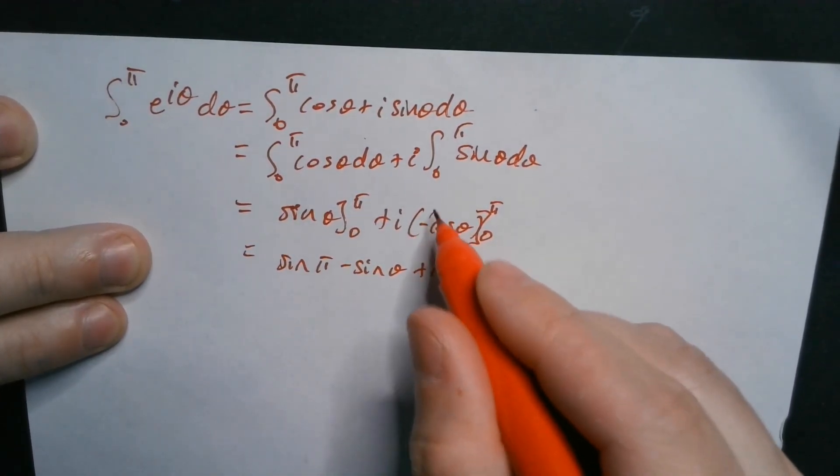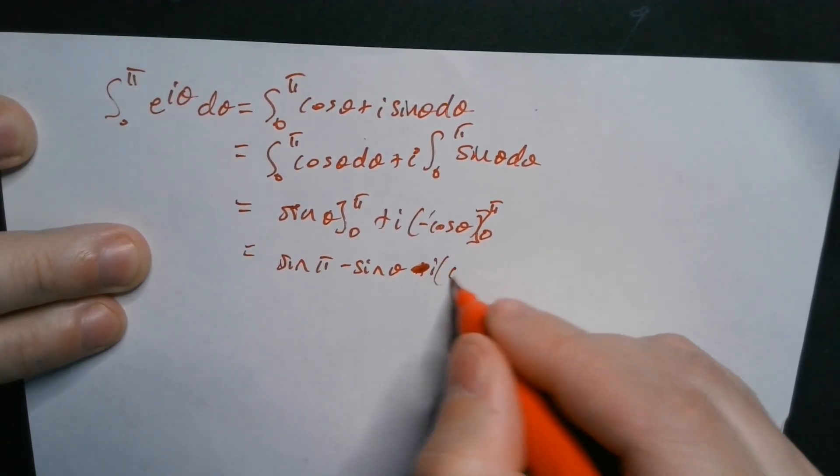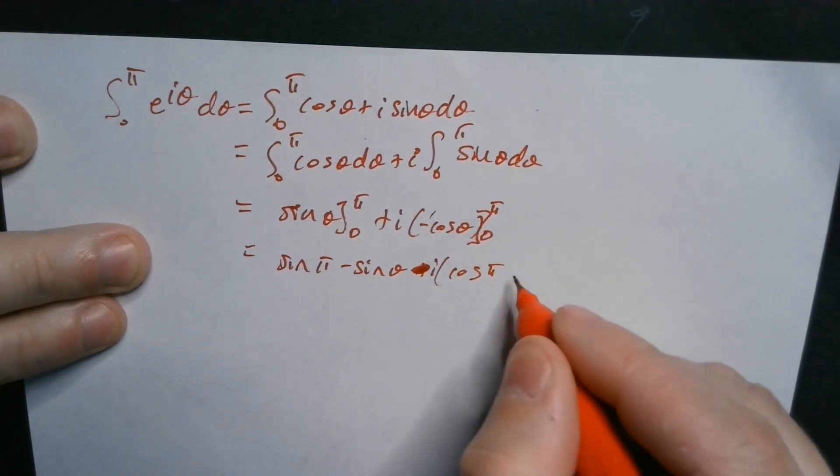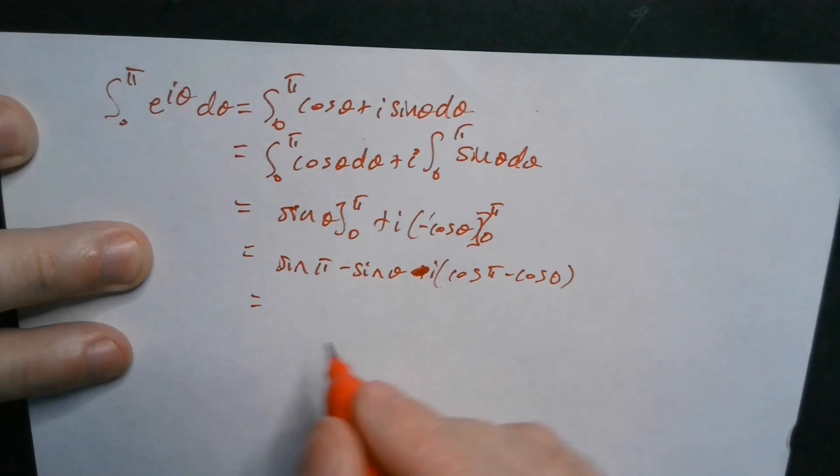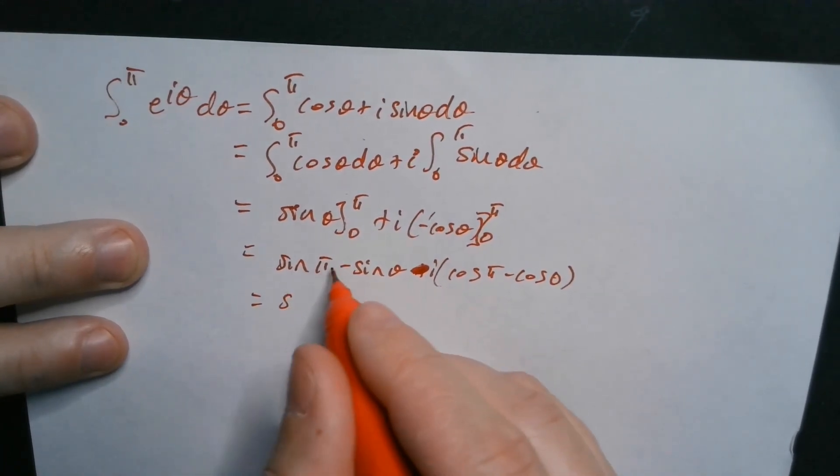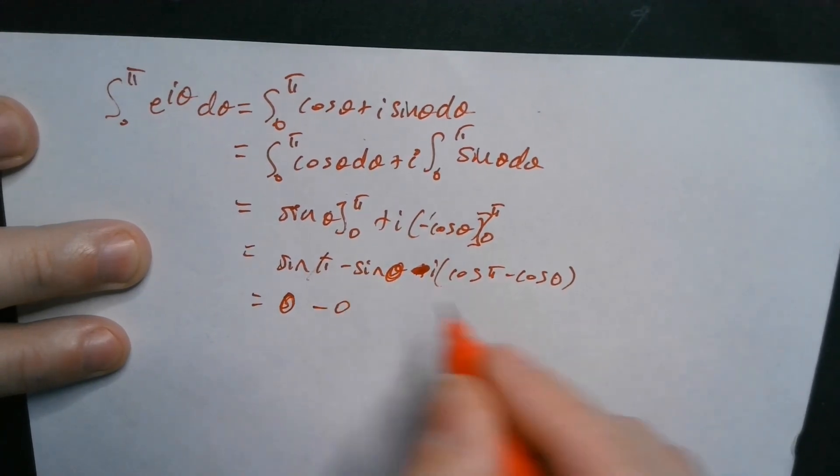And here you can pull this negative outside, so it becomes a negative in the middle here. It's a minus, and then you're going to have cosine of pi minus cosine of 0. So that's going to give us here sine of pi, now sine of pi is 0, the sine of 0 here is again 0,